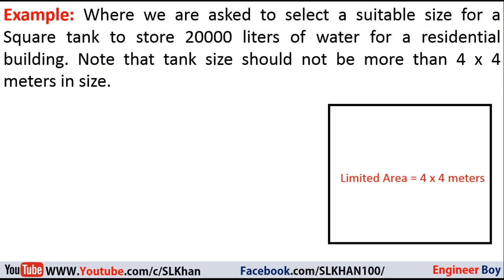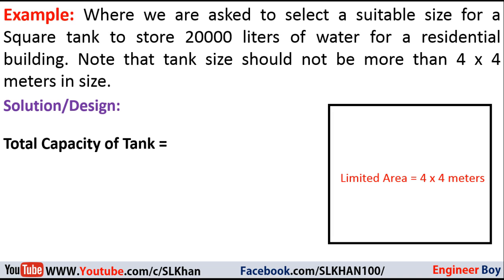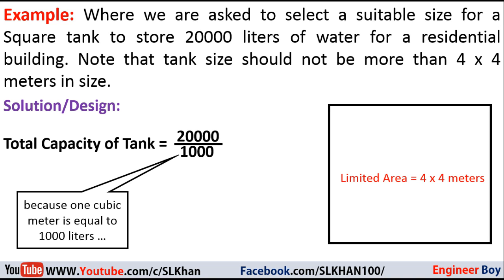The given data is enough, so I'll come directly into the solution. The first thing I want to determine is the capacity of the tank in cubic meters, from the storage capacity of 20,000 liters. The total capacity equals 20,000 divided by 1,000, because one cubic meter is equal to 1,000 liters. So 20,000 divided by 1,000 equals 20 cubic meters — the tank capacity is 20 cubic meters.